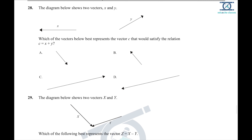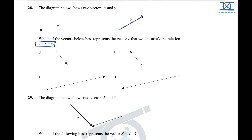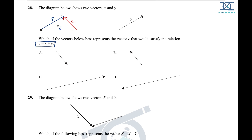Question 28: given vectors x and y, find c = x + y. For vector addition: draw x, then place y at the head of x (tip-to-tail method). The resultant c goes from the tail of x to the head of y. Checking the options, option B shows the correct resultant direction and magnitude.